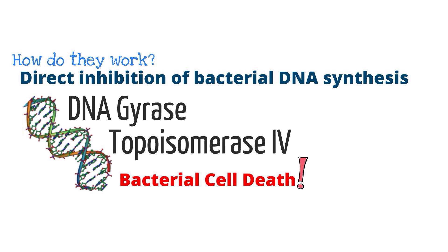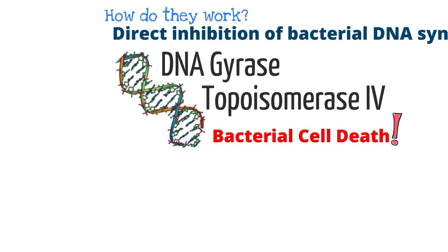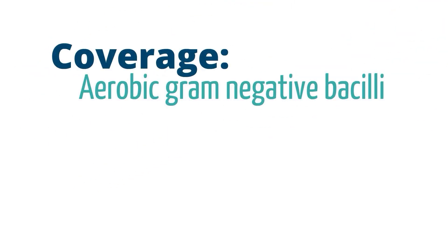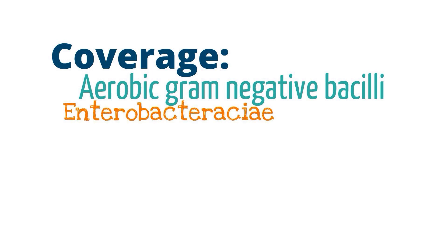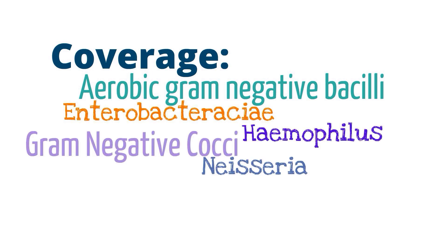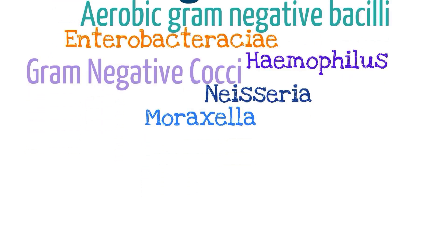Now what organisms are targeted by fluoroquinolones? All the fluoroquinolones generally affect aerobic gram-negative bacilli and gram-negative cocci. Examples of gram-negative bacilli include Enterobacteriaceae and Haemophilus. Examples of gram-negative cocci include Neisseria and Moraxella. In addition, fluoroquinolones can also work against Pseudomonas and Staph aureus.